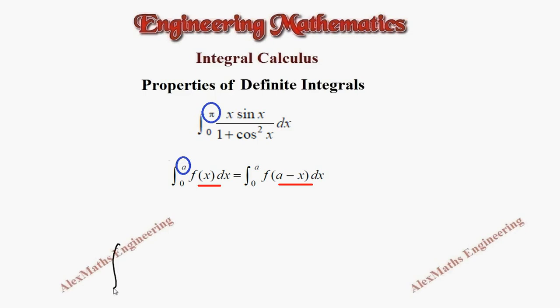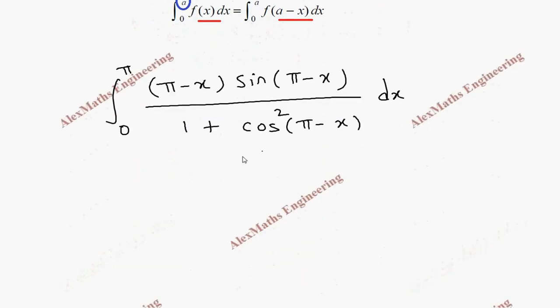We get integral 0 to π. Instead of x, I have to put π minus x. In the same way, sin x is sin π minus x whole divided by 1 plus cos square π minus x dx. Now, integral 0 to π, this π minus x as it is, sin π minus x is sin x only because it is in the second quadrant. And 1 plus cos π minus x is minus cos x. But we have square, so it becomes cos square x dx.